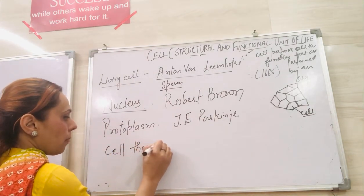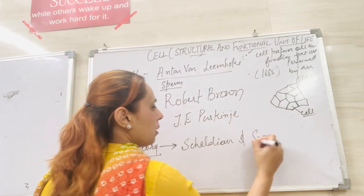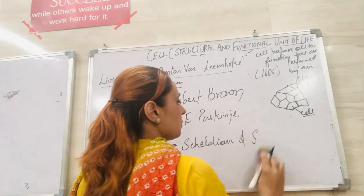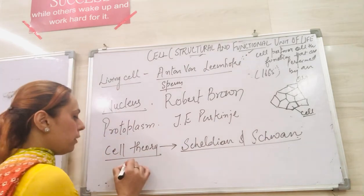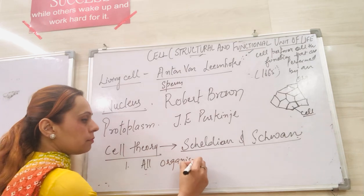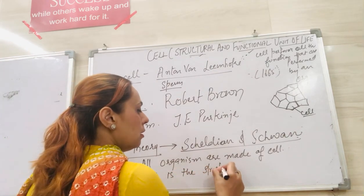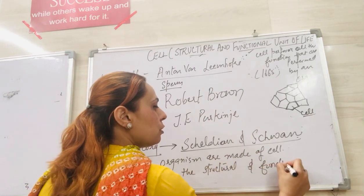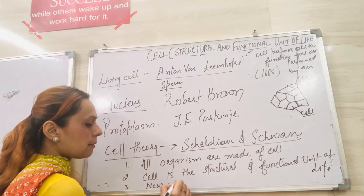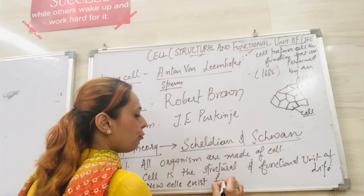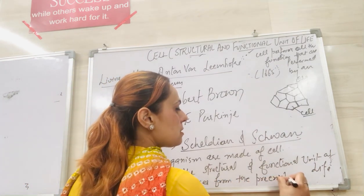The last one is the cell theory. The cell theory was given by Schleiden and Schwann. They explained the cell theory in three points: first, all organisms are made of cells; second, the cell is the structural and functional unit of life; and third, new cells arise from pre-existing cells.